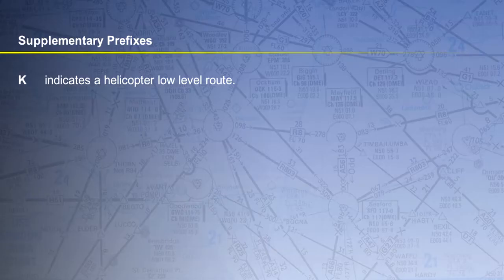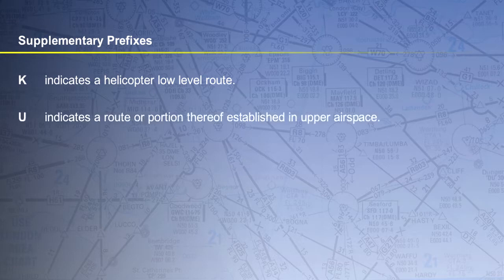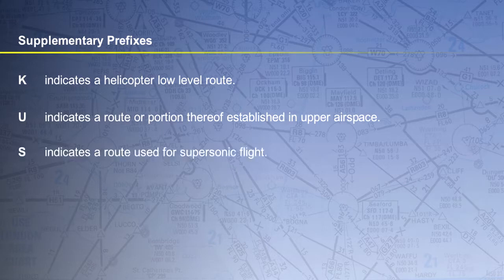Supplementary prefixes are applied to some routes to indicate specific types of use: K to indicate a helicopter low-level route, U to indicate a route or portion thereof established in upper airspace, and S to indicate a route used for supersonic flight.